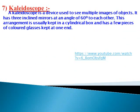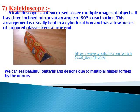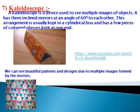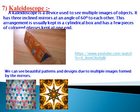A kaleidoscope is a device used to see multiple images of objects. It has three inclined mirrors at an angle of 60 degrees to each other. This arrangement is usually kept in a cylindrical box and has a few pieces of colored glasses kept at one end. We can see beautiful patterns and designs due to multiple images formed by mirrors. An interesting feature of a kaleidoscope is that you will never see the same pattern again.